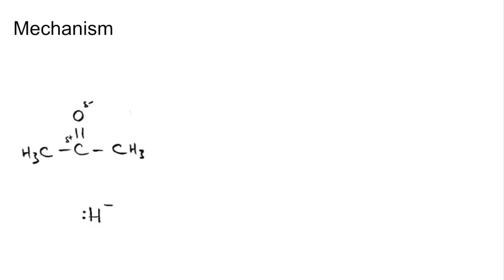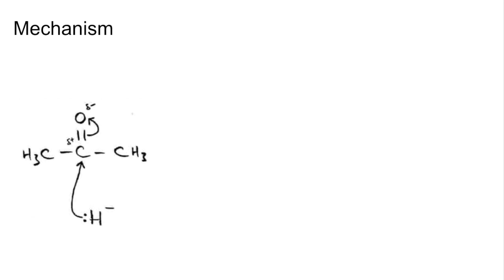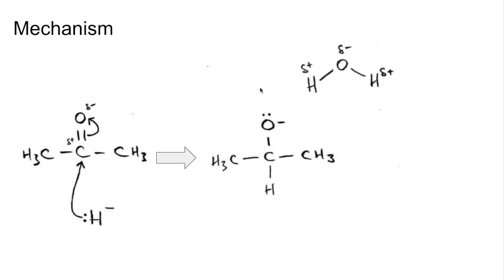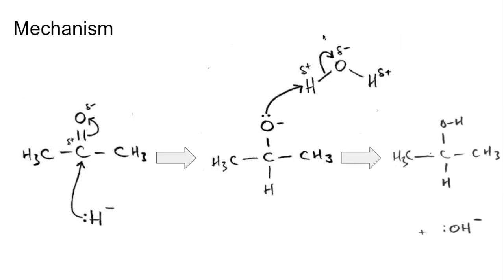Looking at the mechanism for this reaction, I've got propanal drawn with the dipole shown across the C double bond O, and the hydride ion represented as H⁻ with its lone pair. The pair of electrons is attracted to the slightly positive carbon, which repels the pi electron pair up onto the oxygen, generating an intermediate. We then bring in water — a bond forms between the oxygen lone pair and the slightly positive hydrogen of the water, breaking that bond and repelling the pair of electrons onto the oxygen. The products are the secondary alcohol and the hydroxide ion. The nucleophile — the electron pair donor — is the hydride ion.